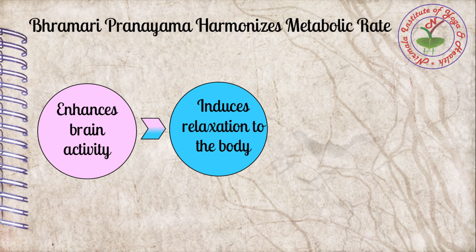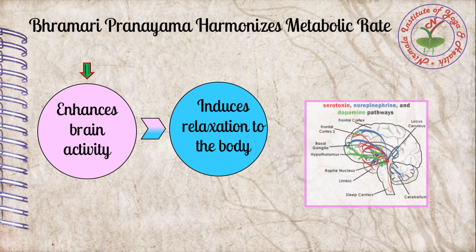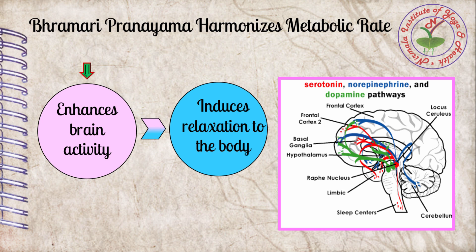Brahmari pranayama is a controlled breathing practice with a soft humming bee sound through exhalation. This practice emphasizes the sound vibrations received from the throat through the ear. Within the body, these sound waves are converted into electrical signals and transmitted to the brain through the auricular branch of the vagus nerve. The long exhalation through the humming bee sound vibrates the deep-lying tissues and organs of the brain.